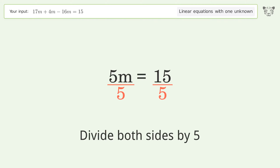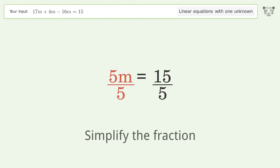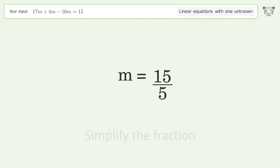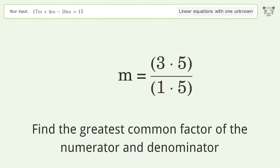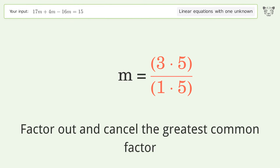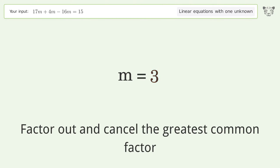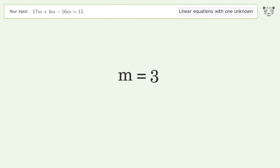Simplify the fraction. Find the greatest common factor of the numerator and denominator. Factor out and cancel the greatest common factor. And so the final result is m equals 3.